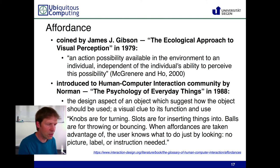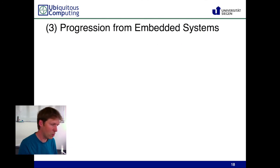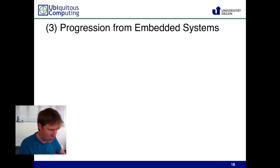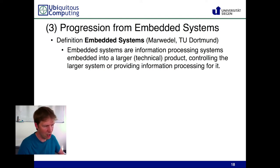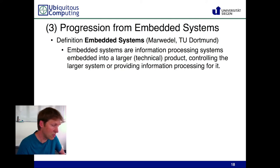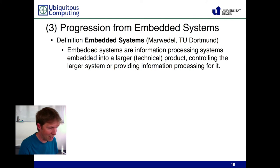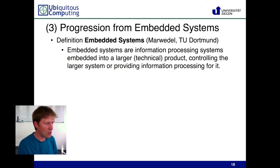The third way we can think about Ubiquitous Computing is in a historical and technological way — as a progression from embedded systems. Embedded systems is an ongoing research area where people focus on having computers — information processing systems — often connected with sensors and actuators, embedded into a bigger entity or larger technical product to control or use that product. For instance, embedded systems in a car can deploy an airbag: if the car is about to crash, this is sensed by an accelerometer, which feeds into a digital system that decides to deploy the airbag.